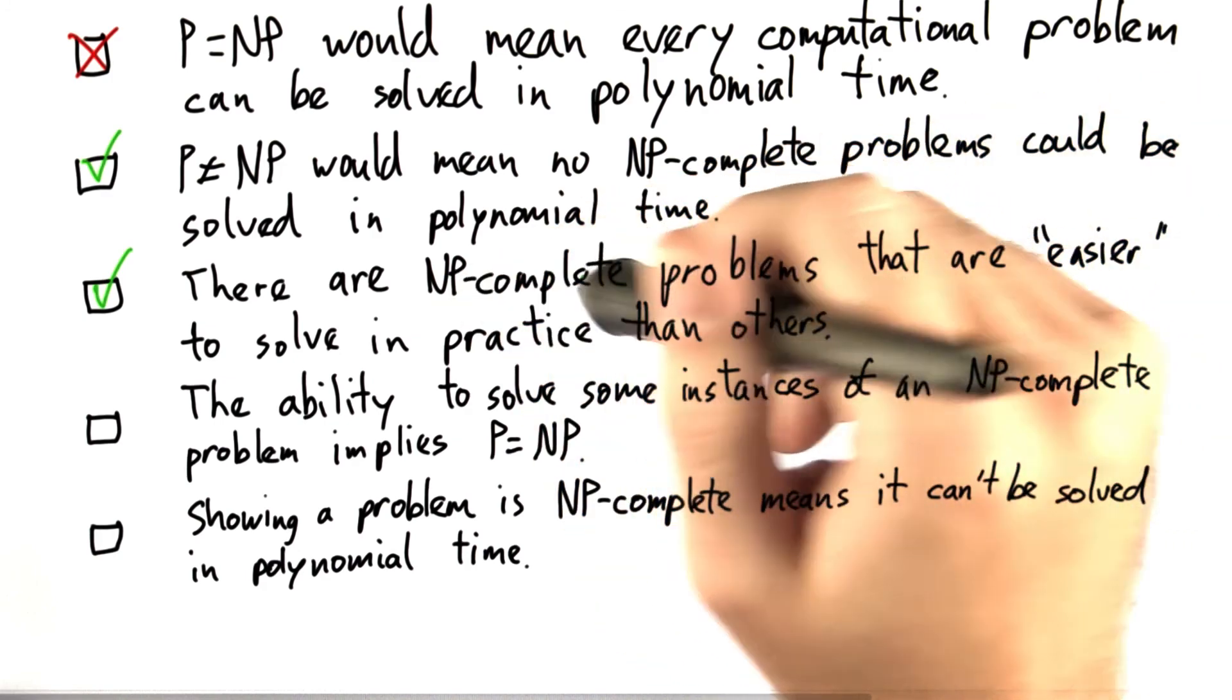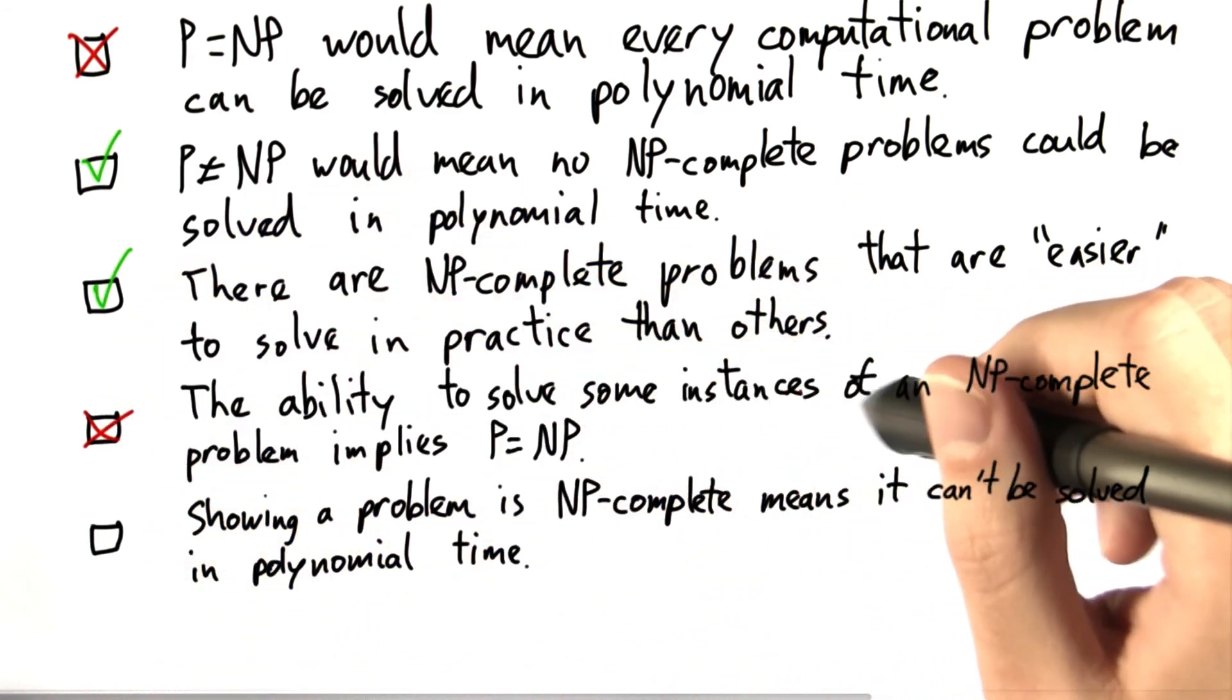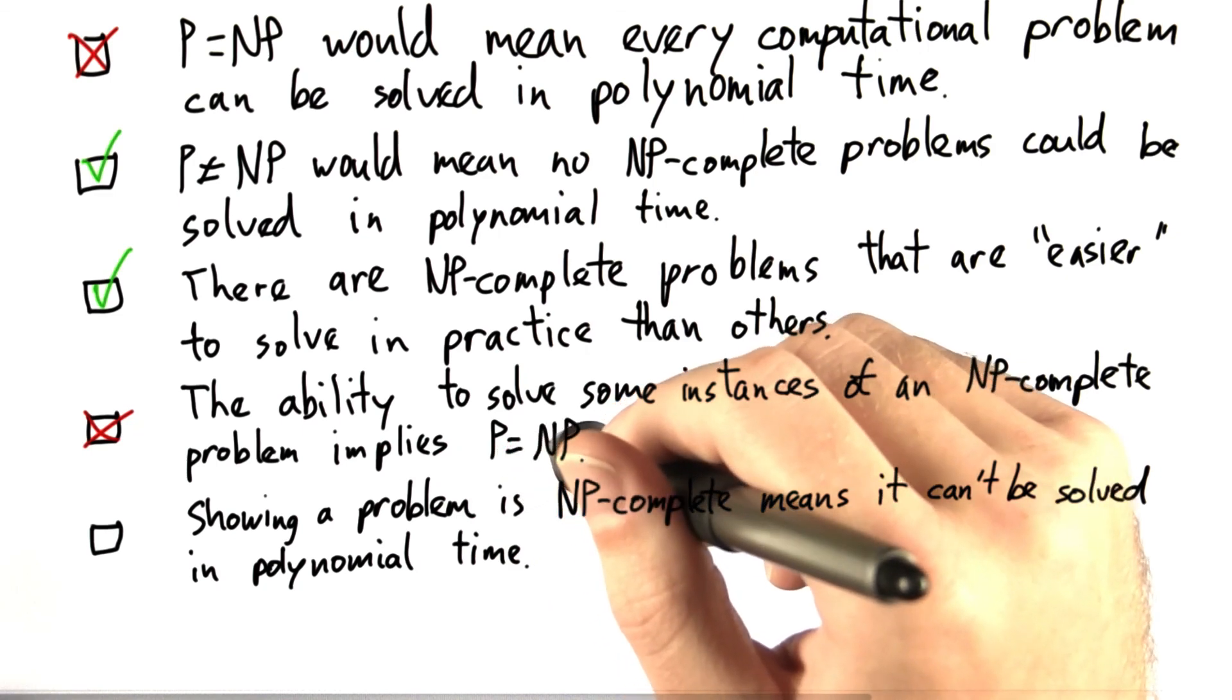And for the fourth one, this is not true. The ability to solve some instances of an NP-complete problem does not imply that P equals NP.